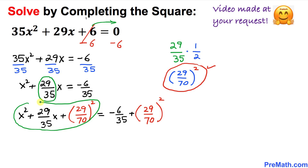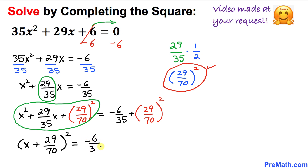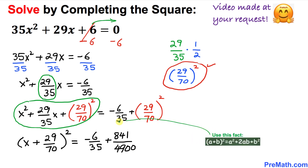The left side represents a completed square, which is simply (x + 29/70)². On the right side, 29 squared becomes 841, and 70 squared is 4,900, giving us negative 6/35 plus 841/4900.